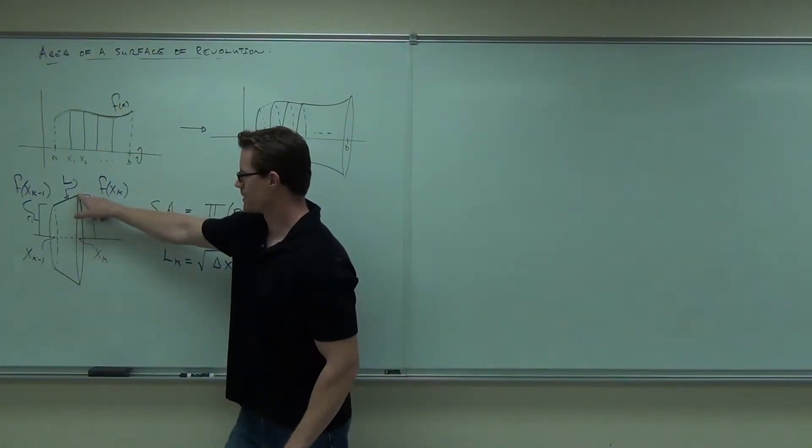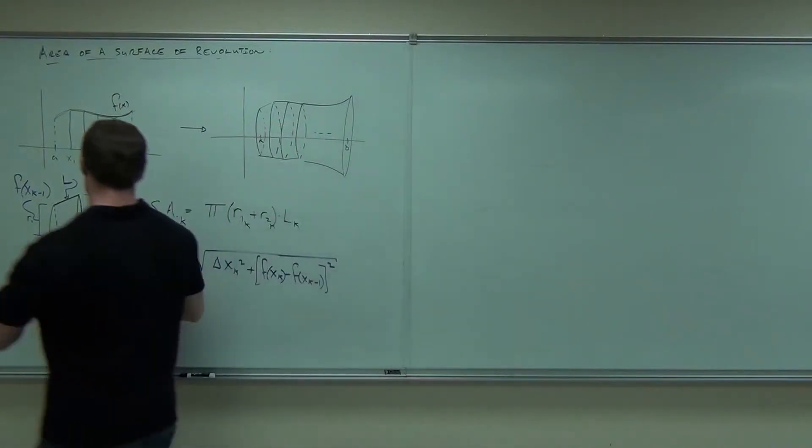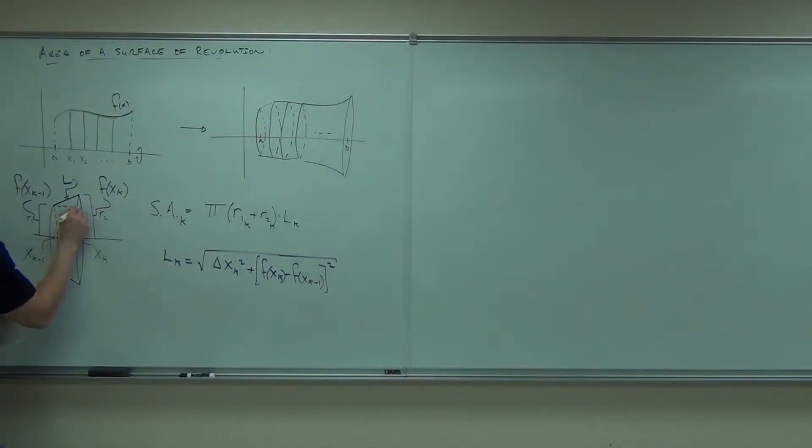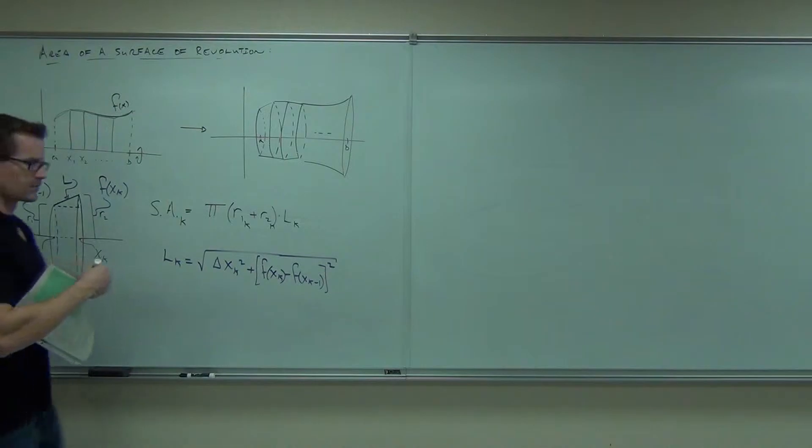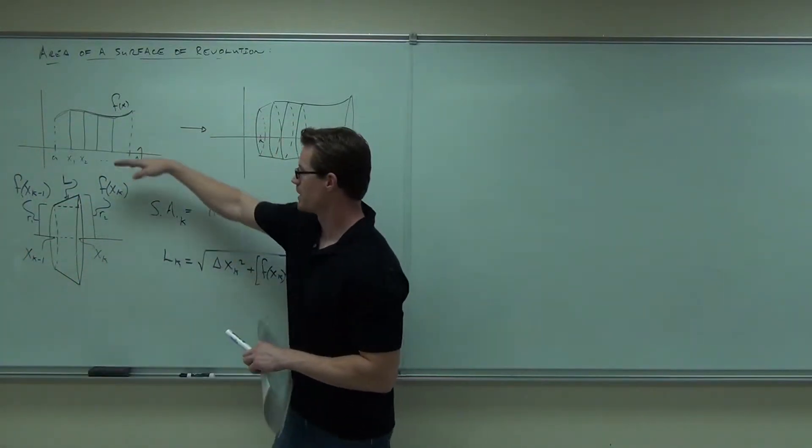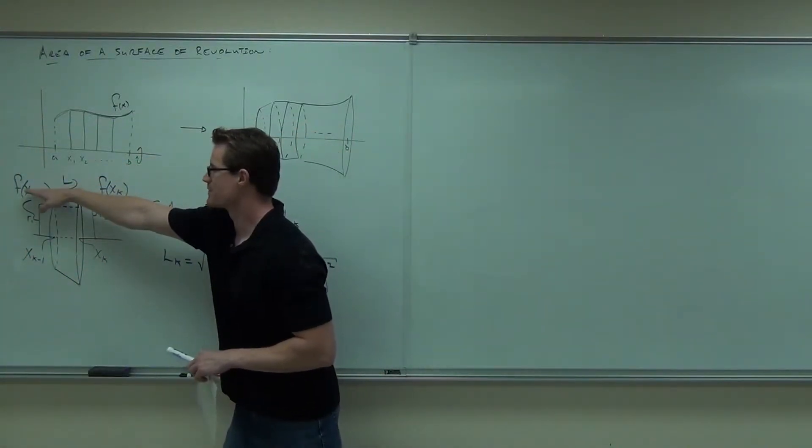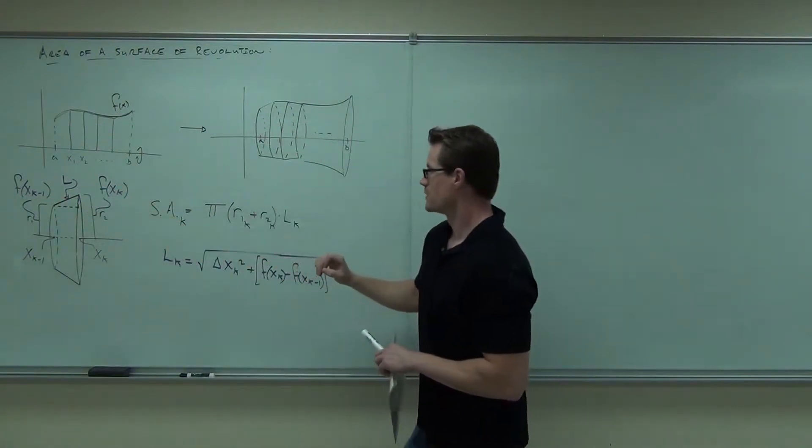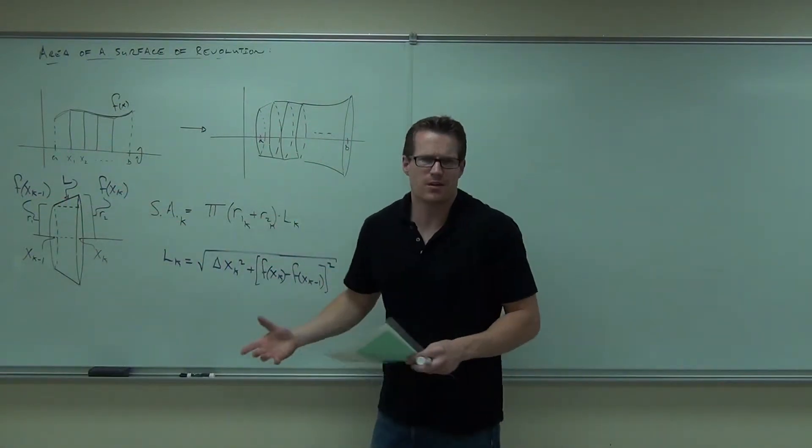The change in height here, from here to here, remember if you draw a little triangle, the change in height is simply f of x sub k minus f of x sub k minus 1. So we have this, and then you square it, Pythagorean theorem.